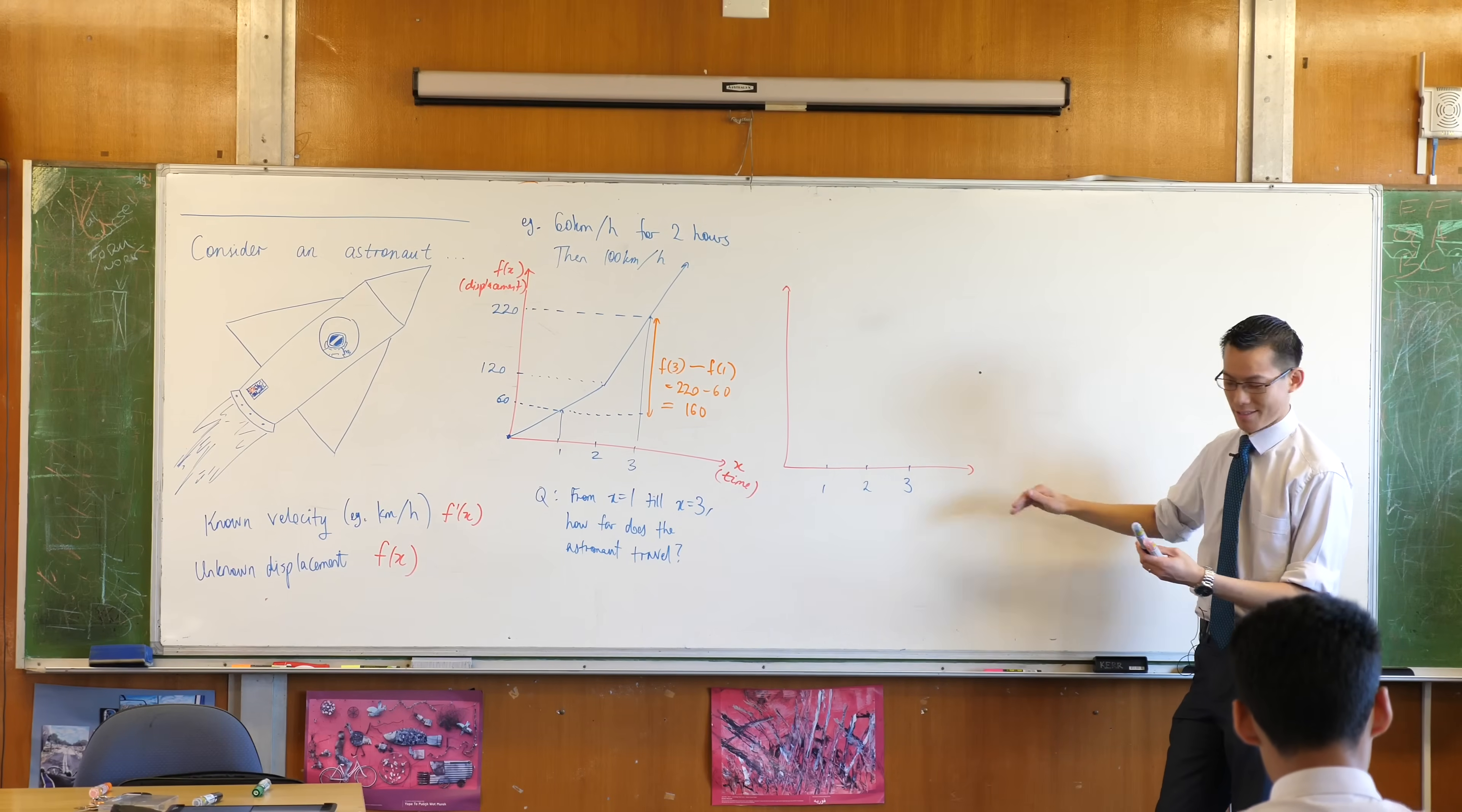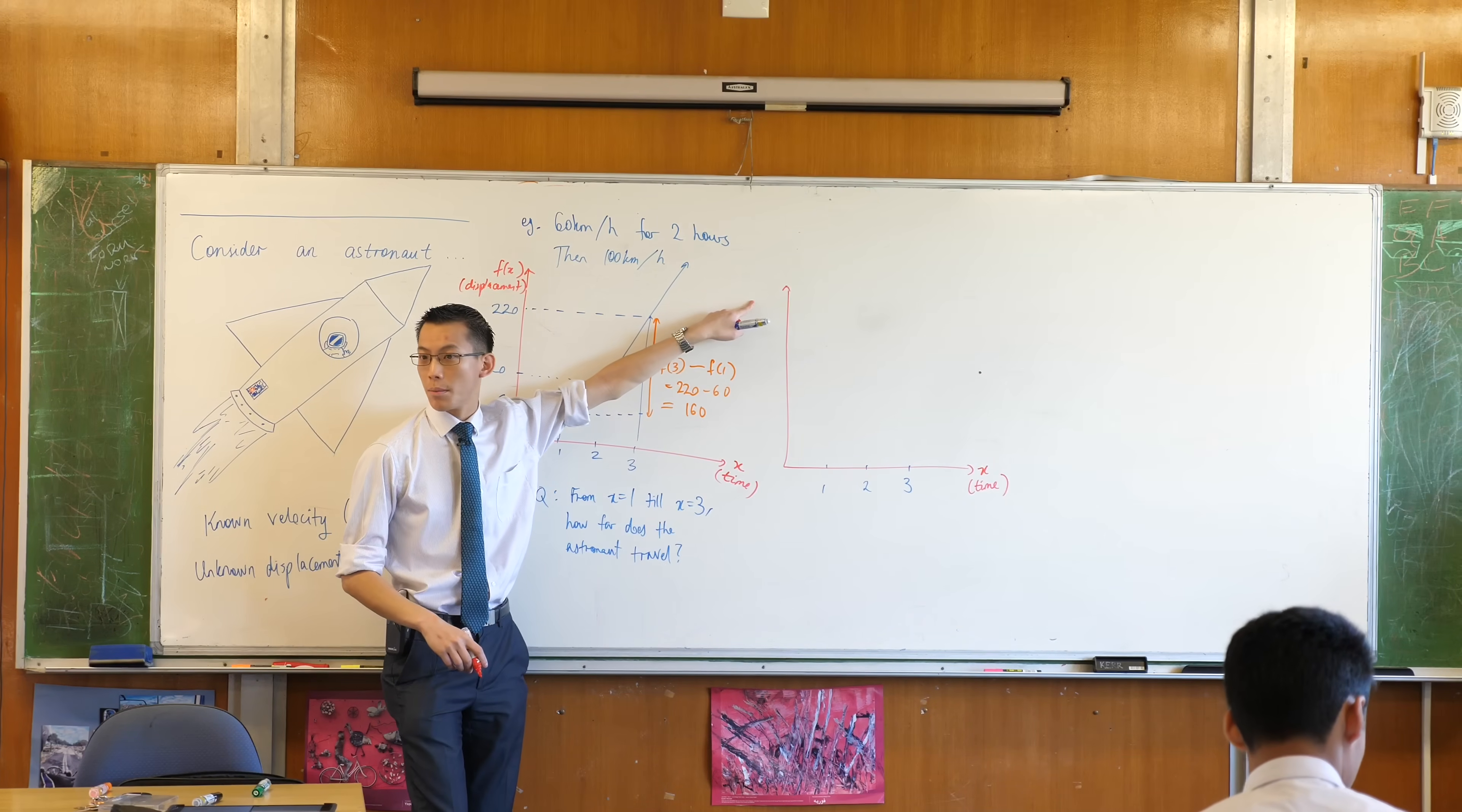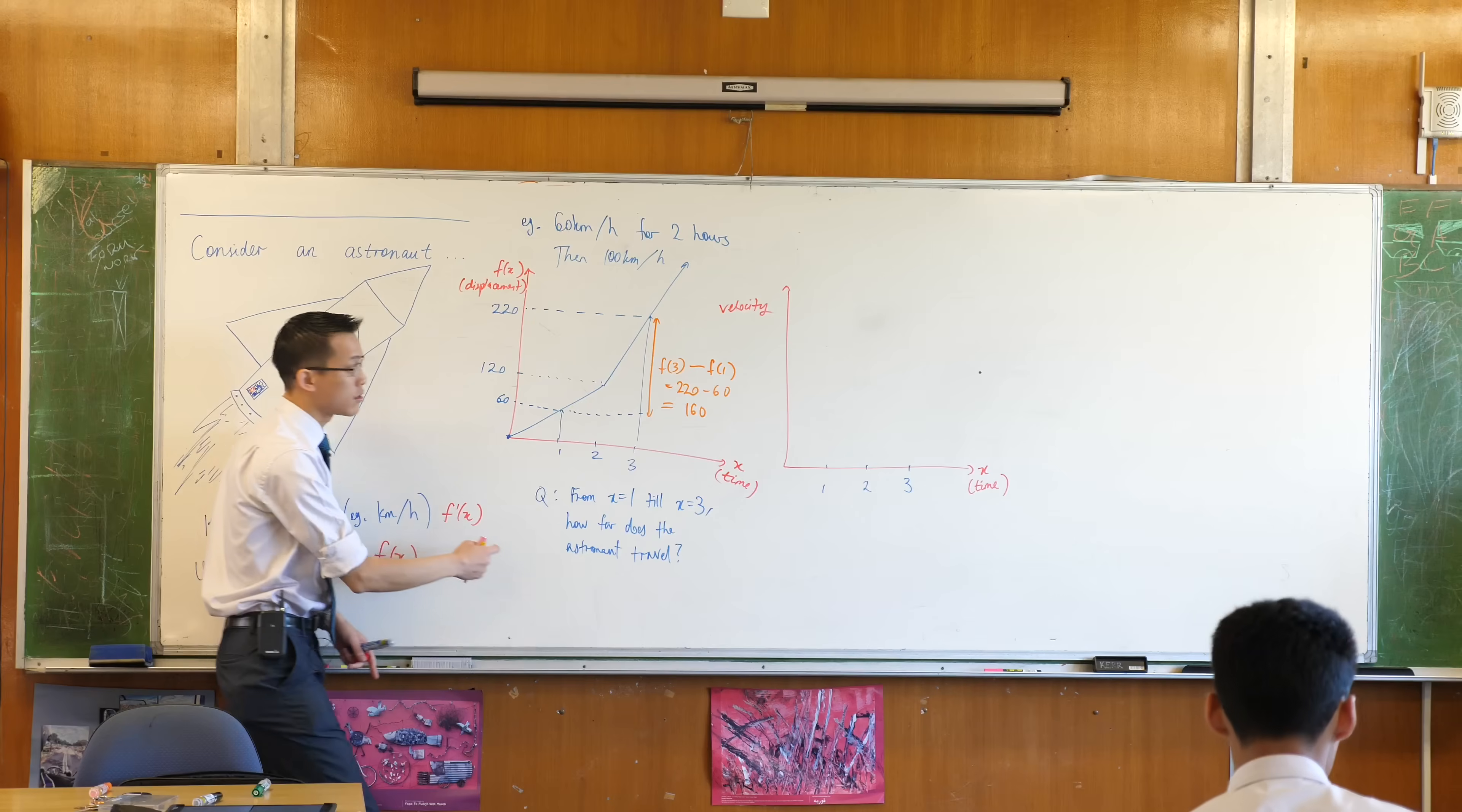This is still a time axis, so this is still x, but what I've got over here is not displacement anymore - it's going to be velocity. Now, because velocity is a rate of change, it's how displacement is changing over time, that's why I can say it's f'.